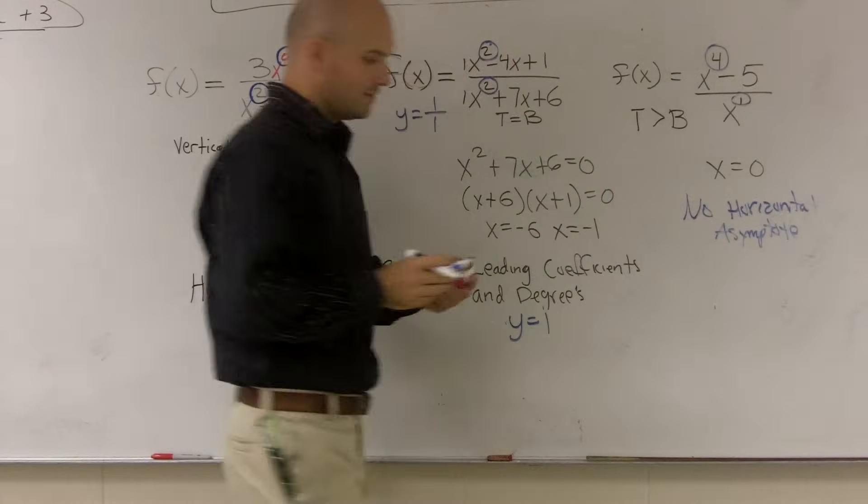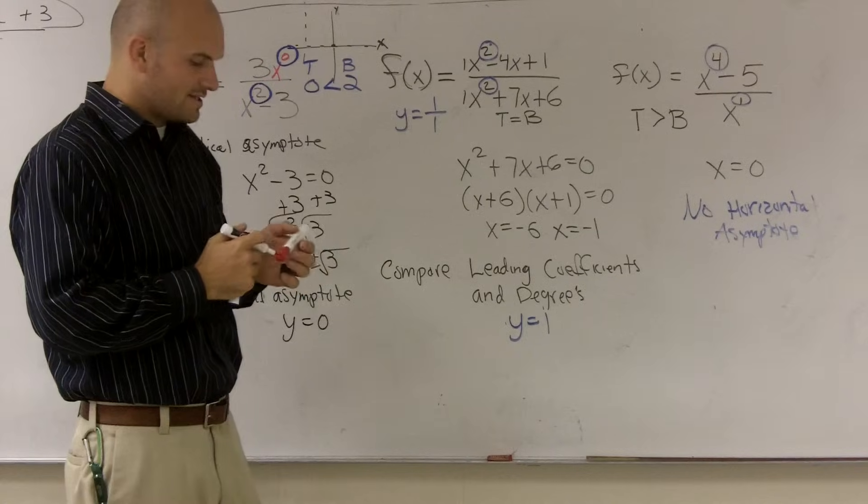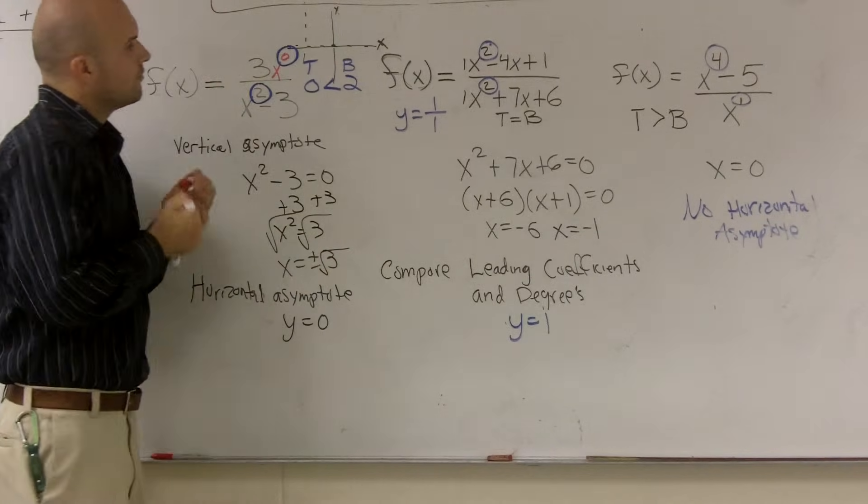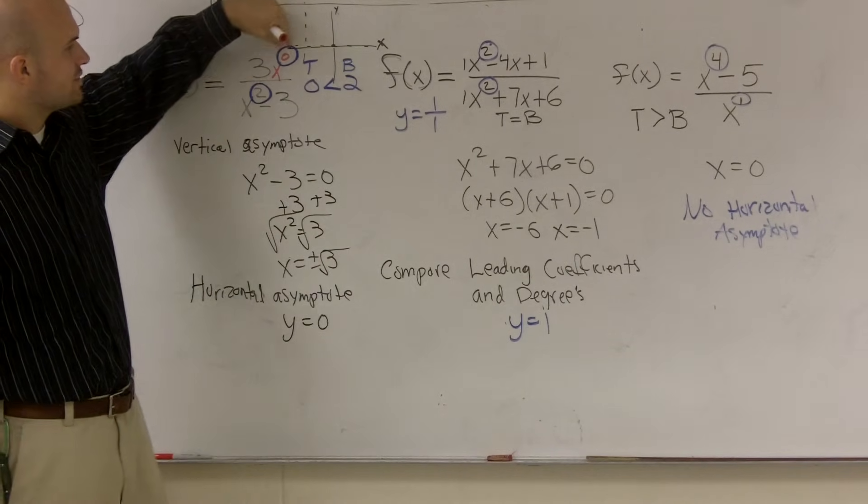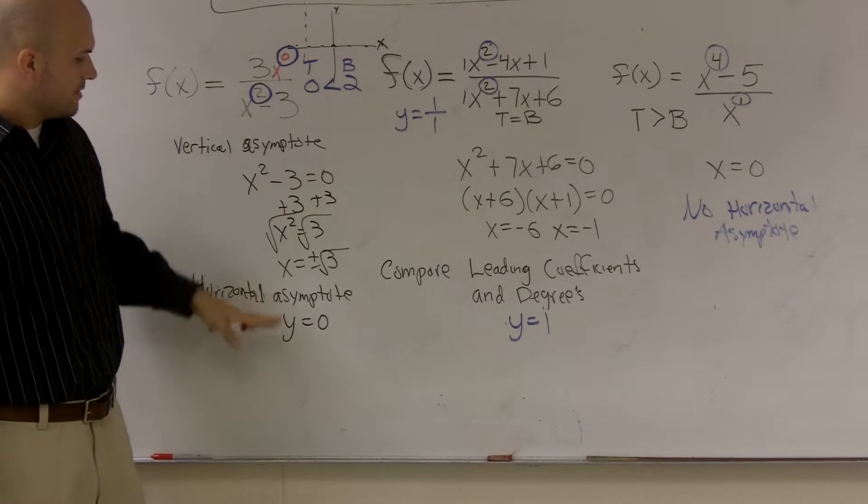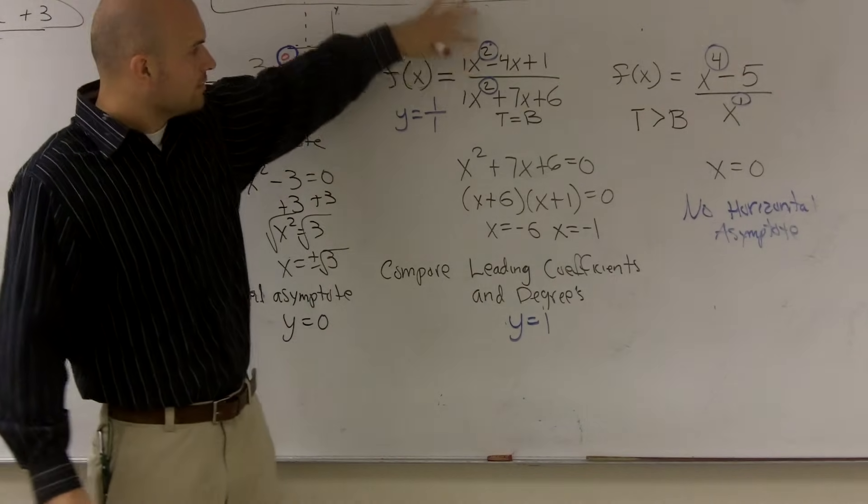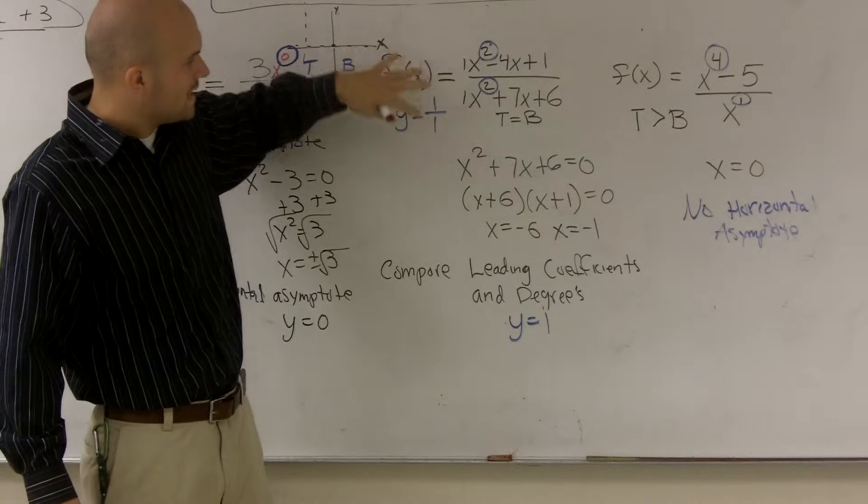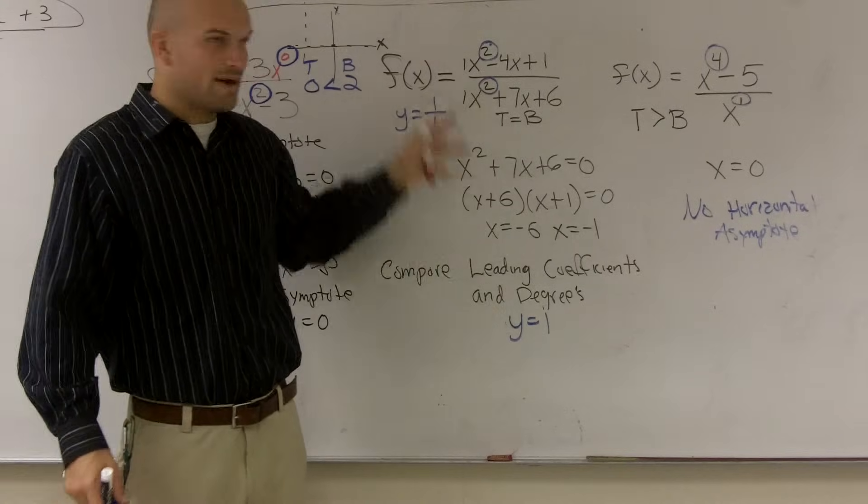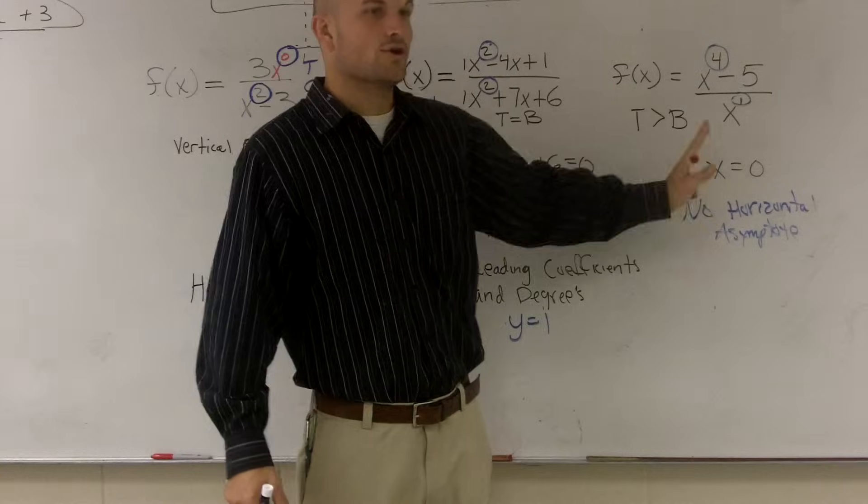That means there's going to be a slant, which we'll show in another video. But if you guys can just remember, whenever the top degree is smaller than the bottom degree of your leading term, then your horizontal asymptote y equals 0. When they're equal, you take the two coefficients and you divide them. And here, 1 divided by 1 is 1. And whenever it's larger than the bottom, there's no horizontal asymptote.